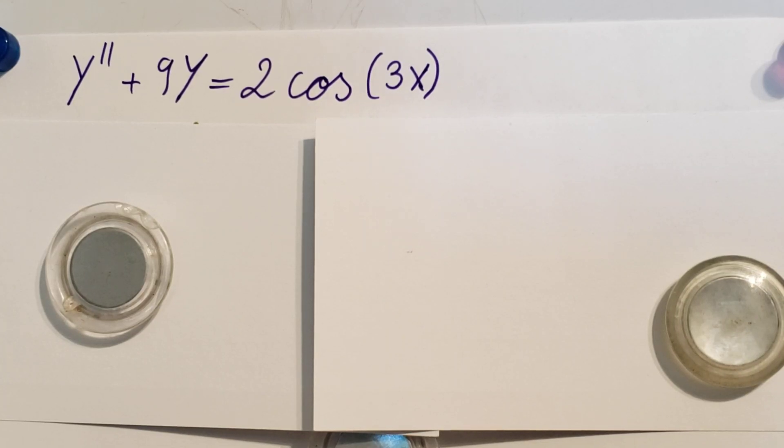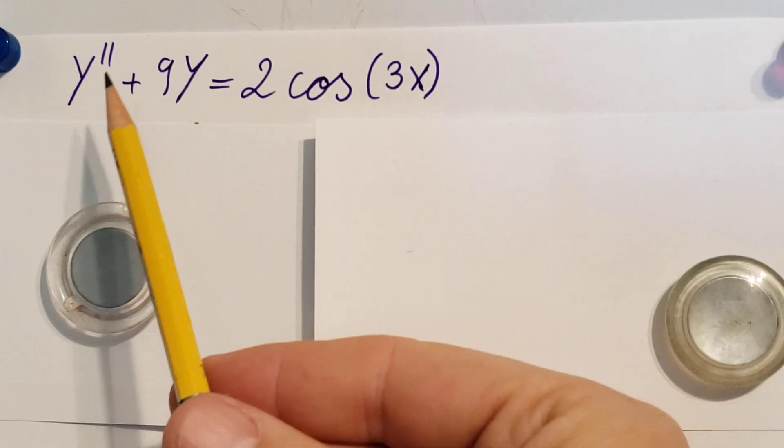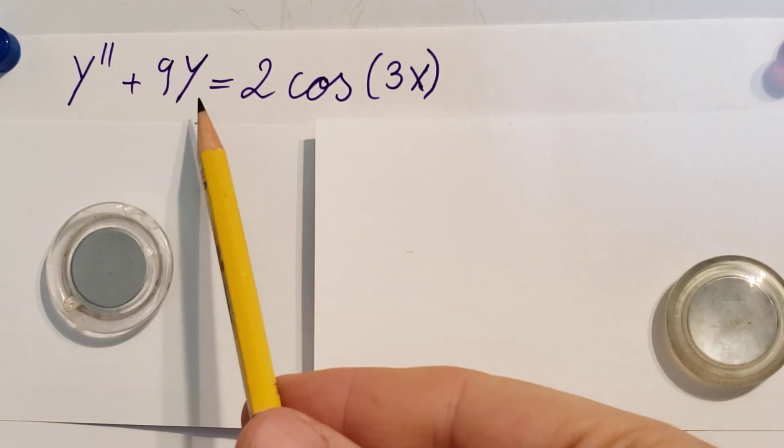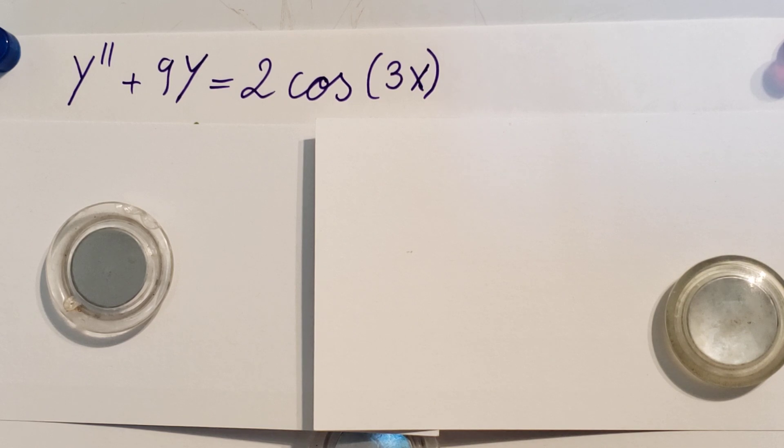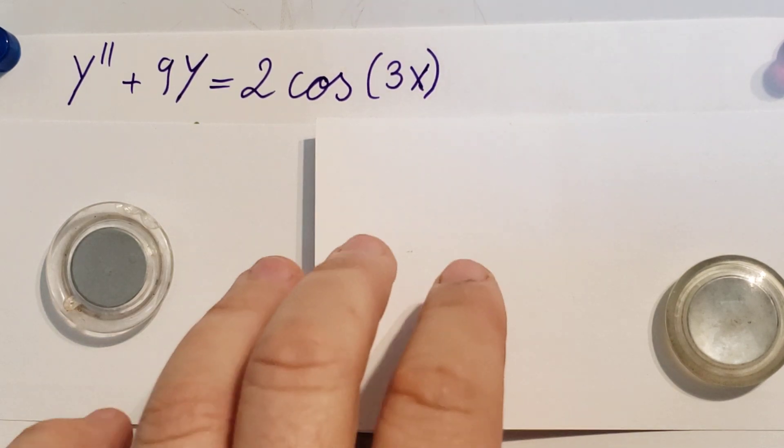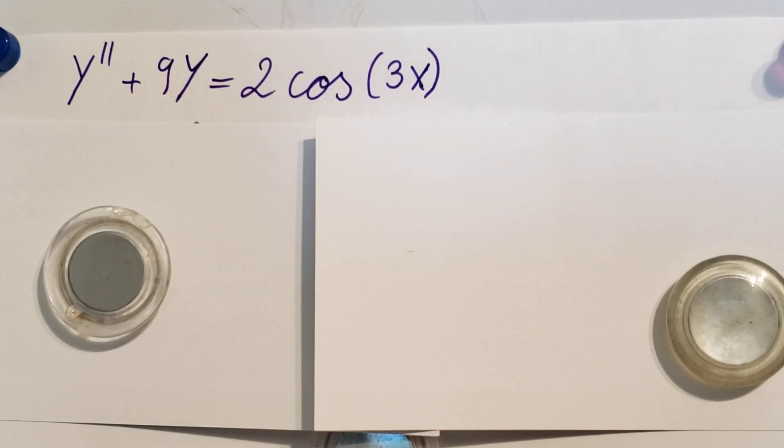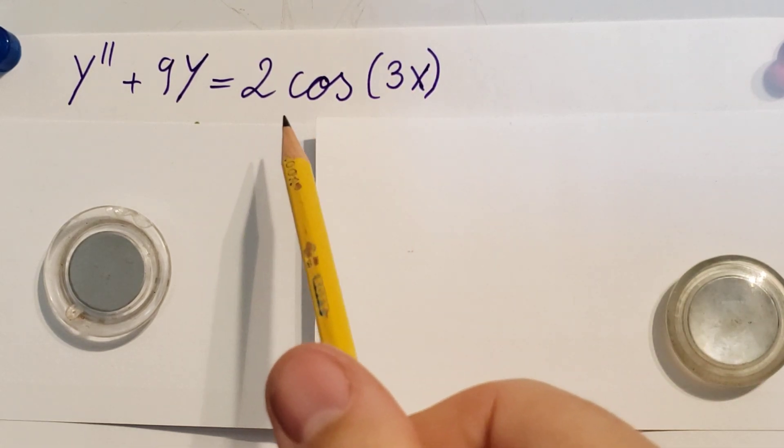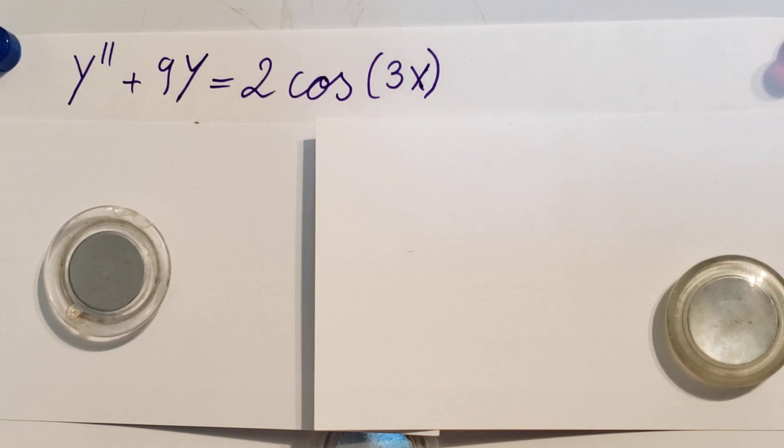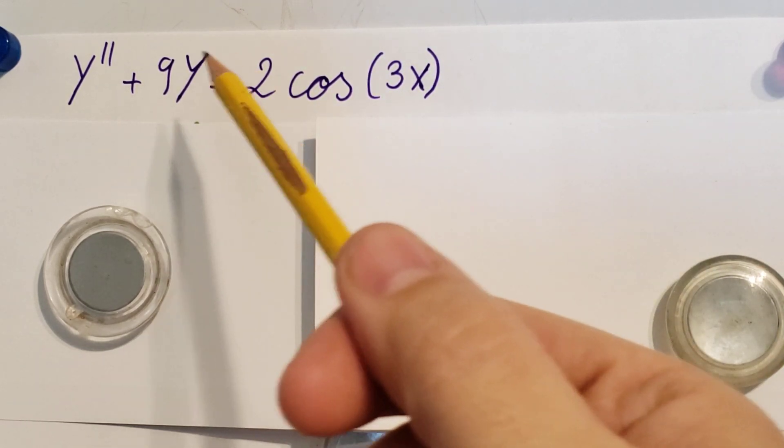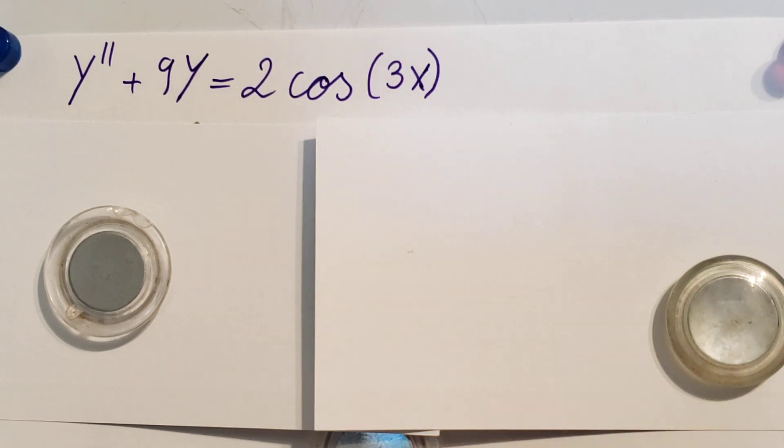Okay, we are working with an ODE, y double prime plus 9y equals 2 cosine 3x. Alright, well, ladies and gentlemen, I hope you put your seatbelts on because this one's going to be a long one. So first up, just by looking at it, what method should we use? Well, I'm looking on the right hand side, there's a cosine, right? So the undetermined coefficient method sounds like a good choice every time we have a sine, cosine, an e to a power, or some simple polynomial. So that's what we're going to shoot for, the undetermined coefficient method.